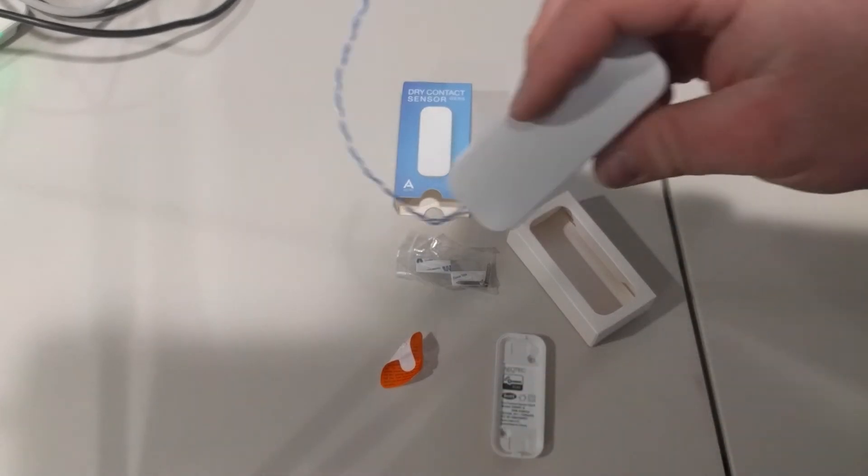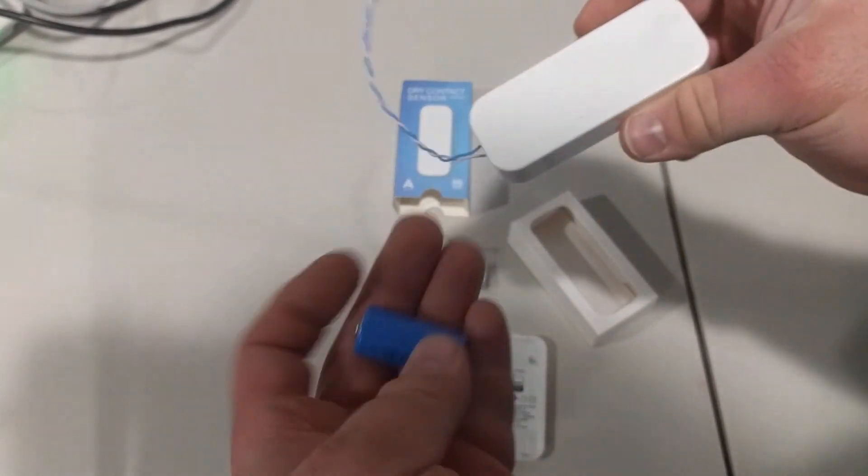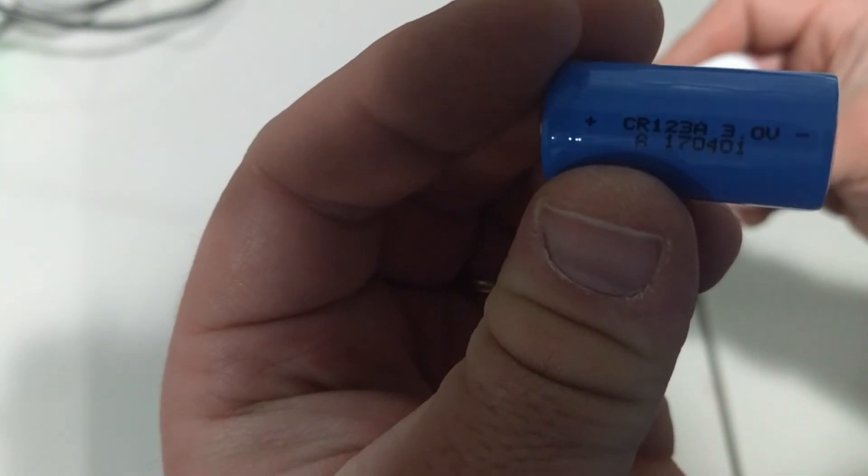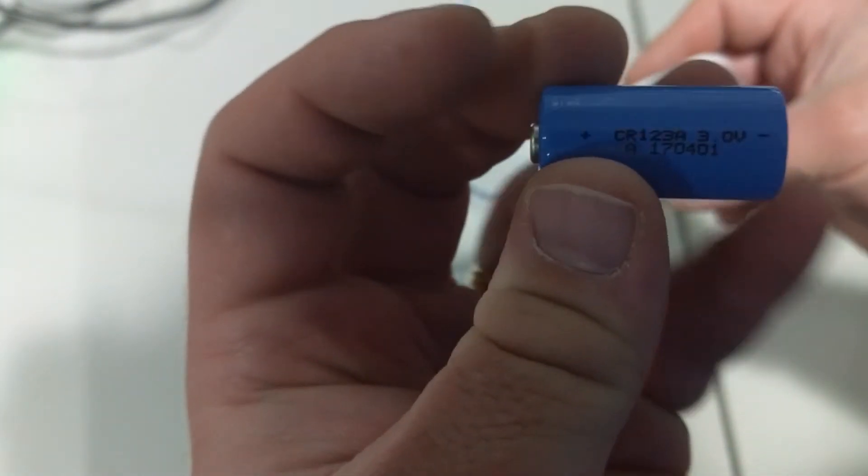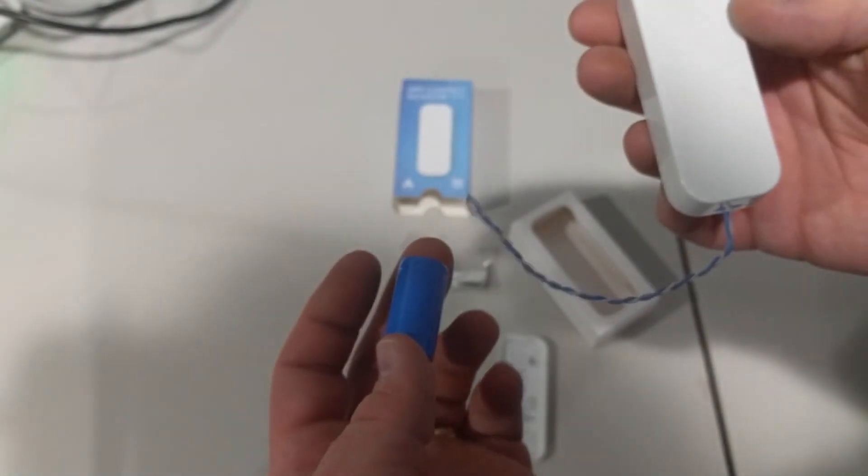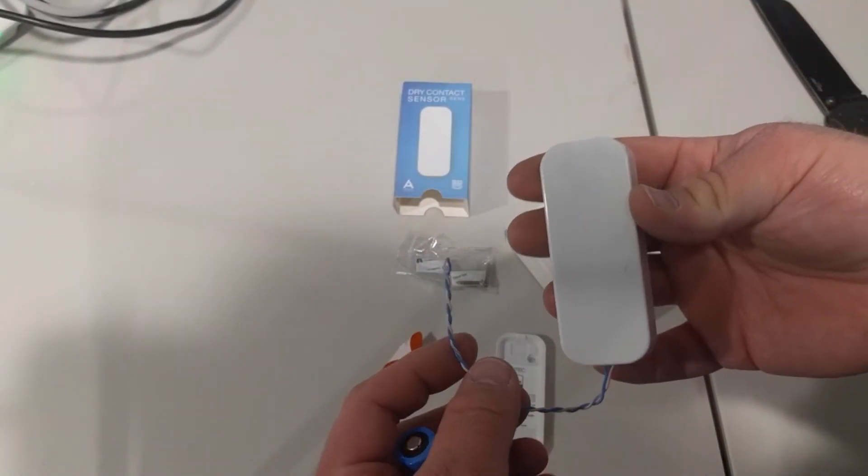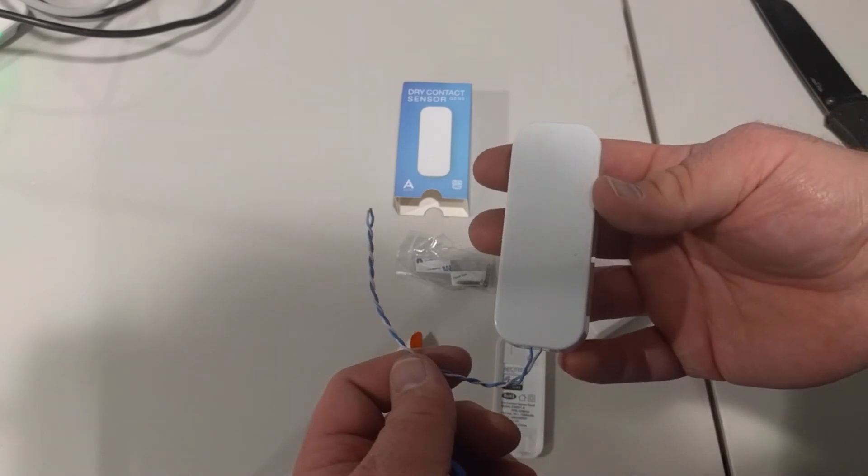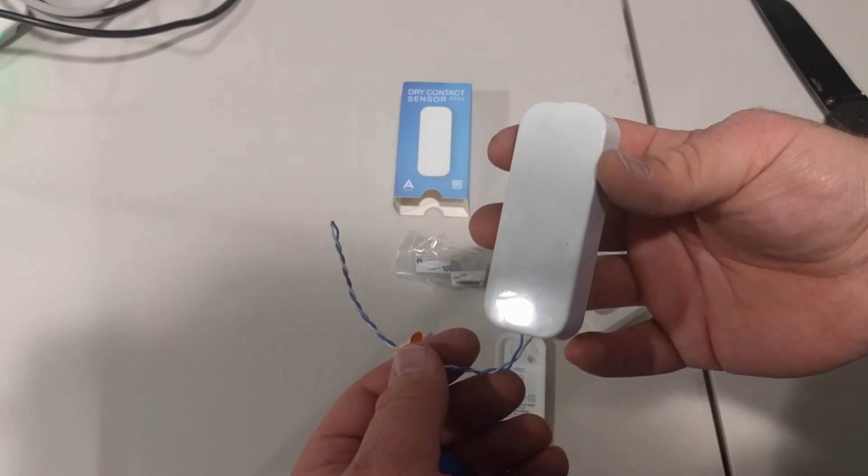So again, a little contact sensor, uses whatever wires you want. And it is a CR123A 3-volt battery. We'll have links to everything down in the description. If you do have additional questions, feel free to leave a comment down below. Don't forget to like this video and subscribe to our channel.